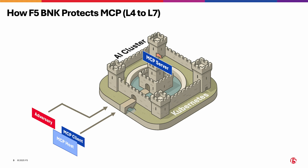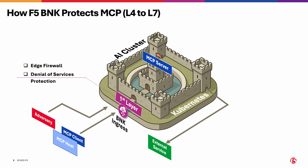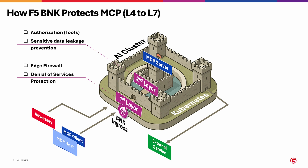Securing the MCP server is like fortifying a castle — defense in depth is essential to prevent a single point of failure from compromising the entire system. MCP servers often integrate with large systems, both internal and external, which frequently require egress traffic. BNK acts as a security gateway to the cluster. The first layer of defense includes edge firewalling and built-in denial-of-service protections to block unauthorized sources and reduce the attack surface. DOS attacks can also be offloaded to hardware. As traffic enters BNK, it enforces a second layer, ensuring only authorized clients can access exposed MCP tools.